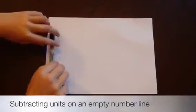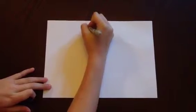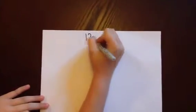Subtraction of units on an empty number line. First, write the sum clearly: 12 subtract 5.